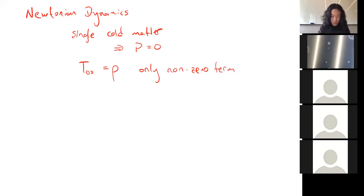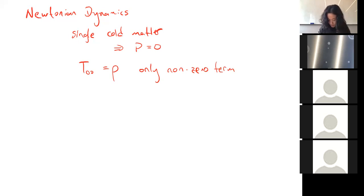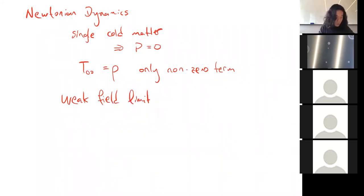If you solve the Einstein equation using this energy-stress tensor and then take the weak-field limit — basically taking a Newtonian limit — what you get is the very familiar Poisson equation. I'm going to write it in a slightly strange notation, so bear with me.